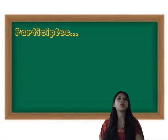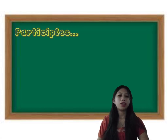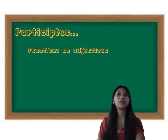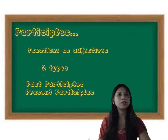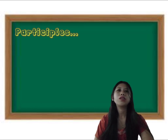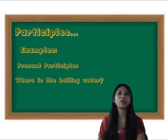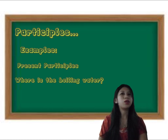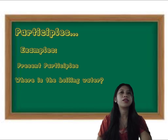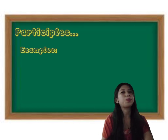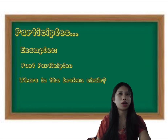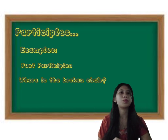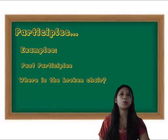The next one is participles. So when we say participles, it always functions as adjectives, and it has two types: the past participles and present participles. The example for present participles is: "Where is the boiling water?" So the word boiling here serves as the adjective, and it is a present form. And the example for past participles is: "Where is the broken chair?" The word broken here is the past participle of the verb "to break," and it also serves as an adjective.